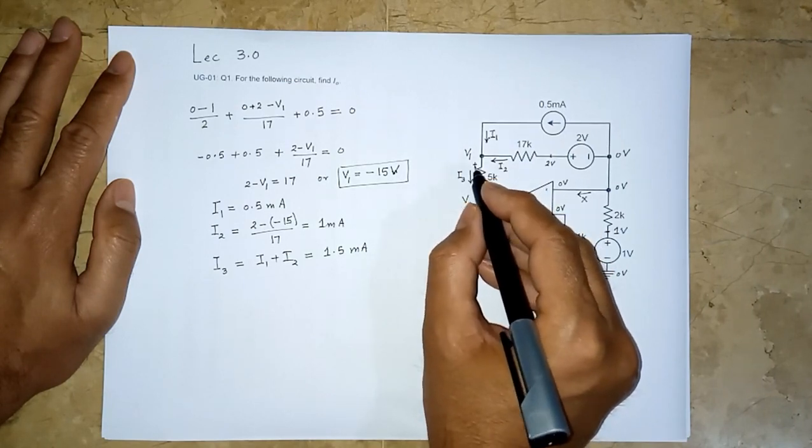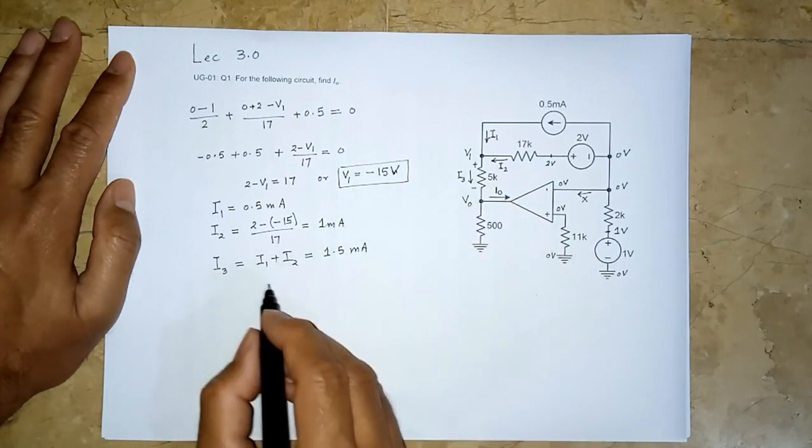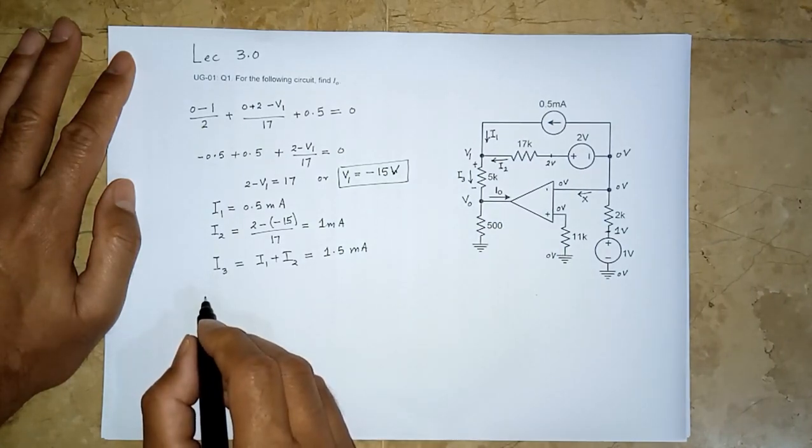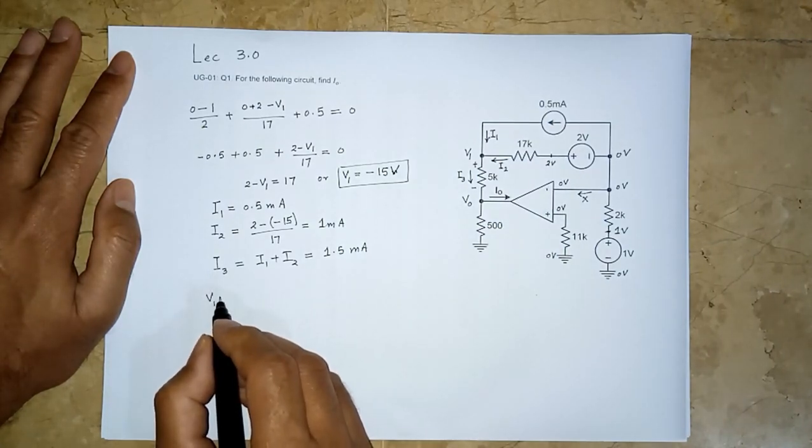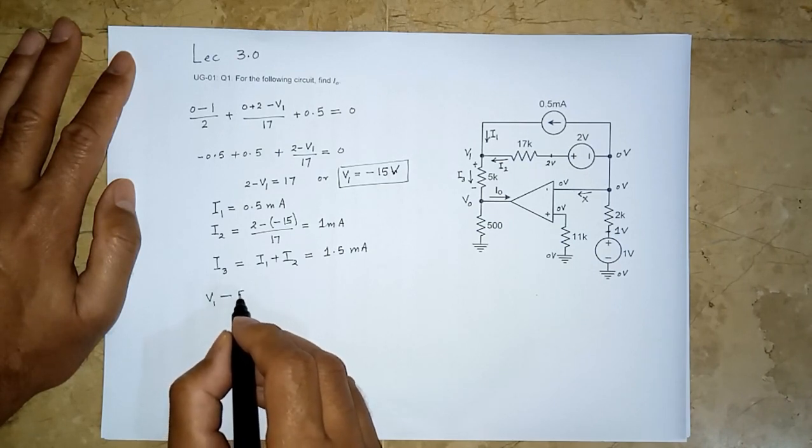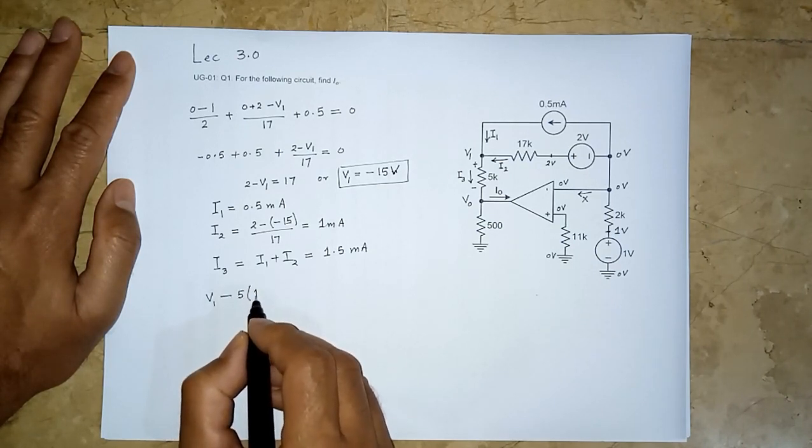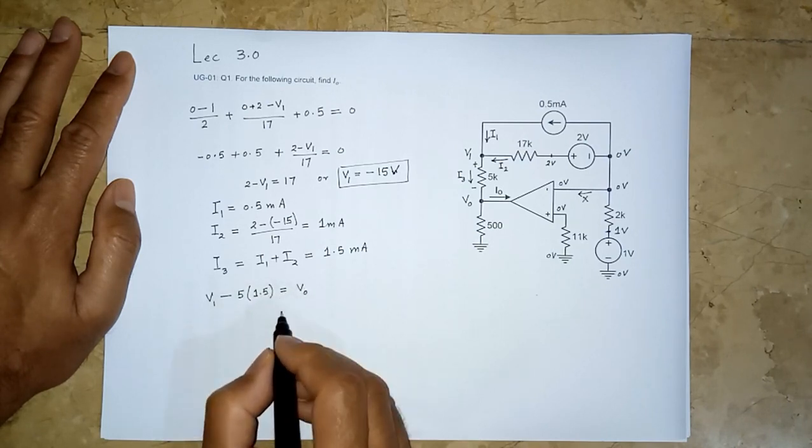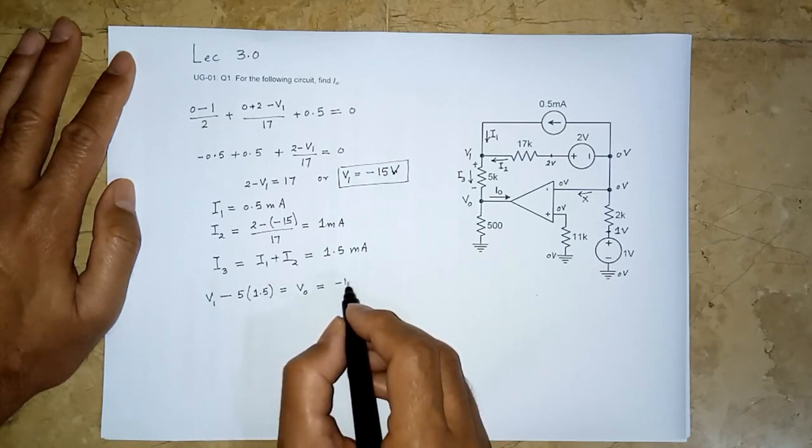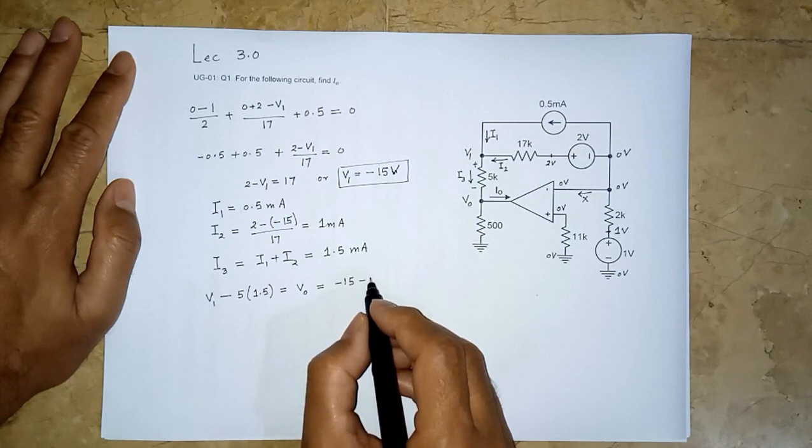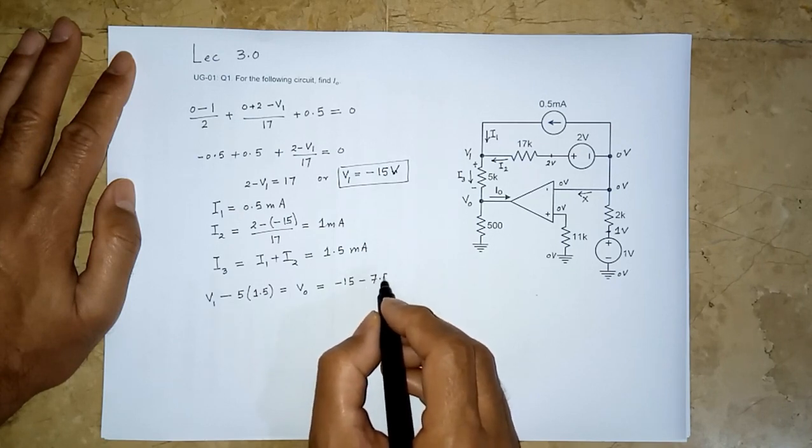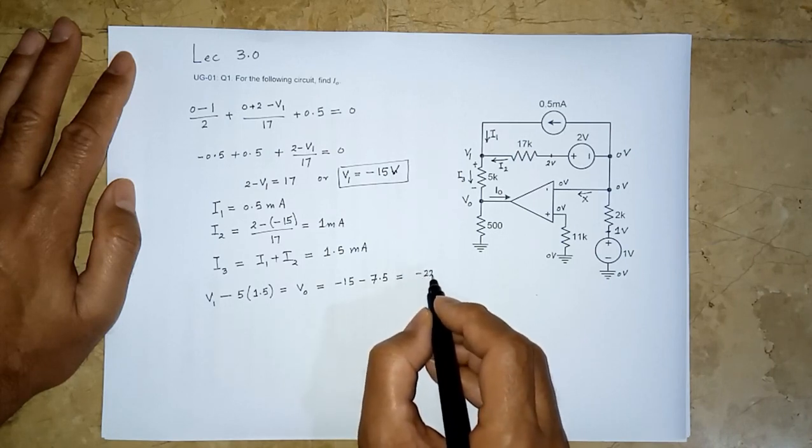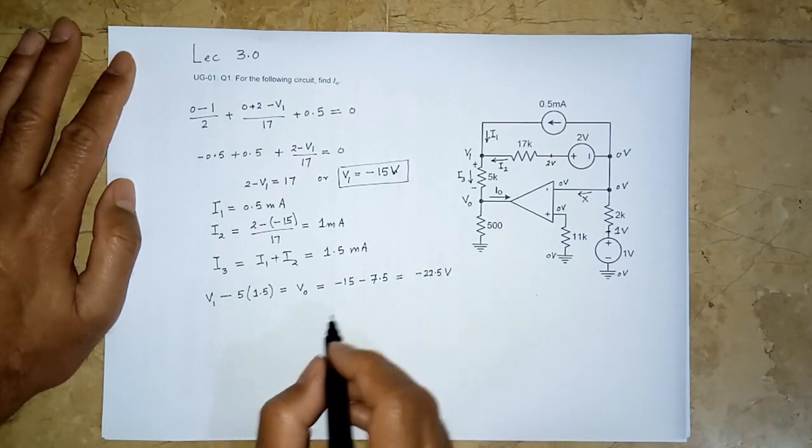i3 comes in here. Now we can very easily find this voltage across this 5 kilohm resistor, and therefore we can find this v_o. So v1 and a drop of 5k into 1.5 milliampere current is going to give us v_o. Or in other words, we have minus 15, and a further drop of 7.5 is going to give us v_o of minus 22.5 volt.